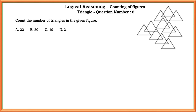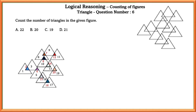Question number six: count the number of triangles in the given figure. When two triangles join together by overlapping, smaller triangles are formed within. We should count both the bigger ones and the smaller ones made by these two triangles. Counting all of these, the answer is 20 triangles.